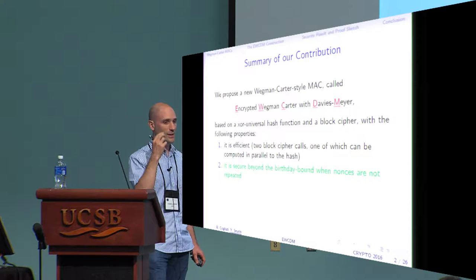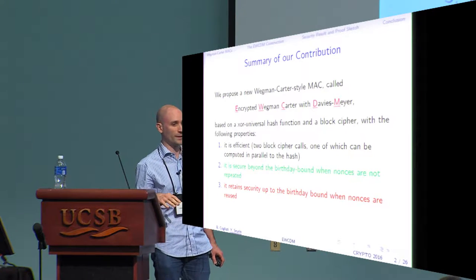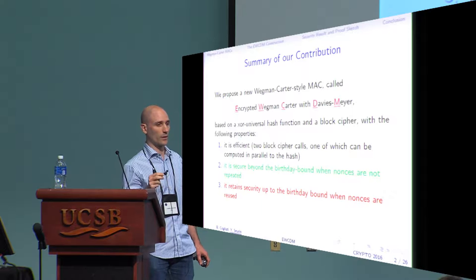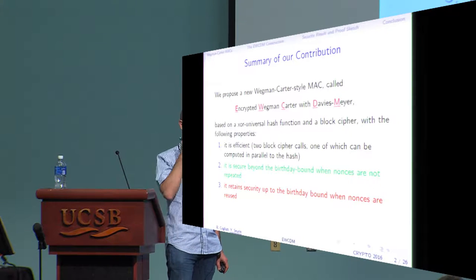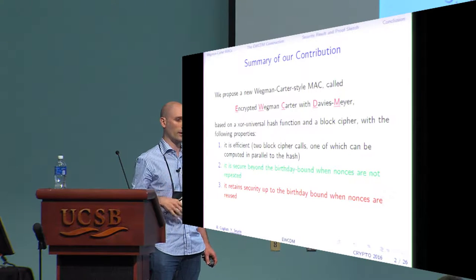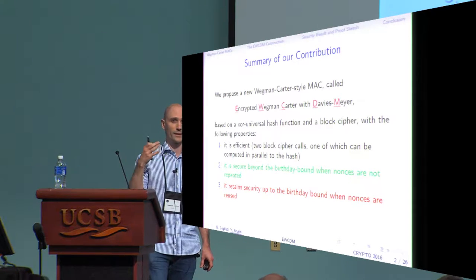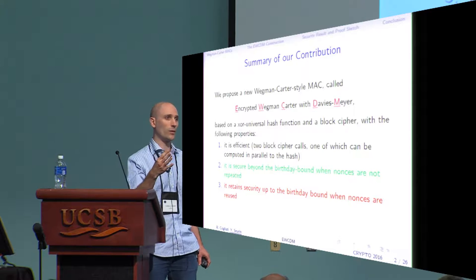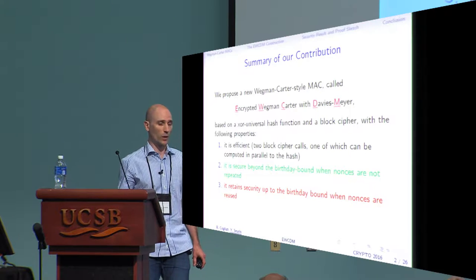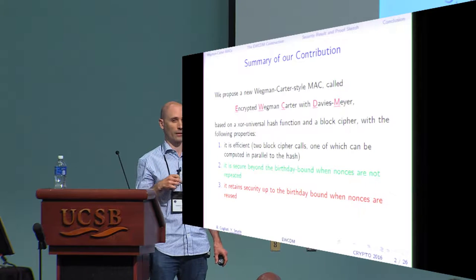It is secure beyond the birthday bound when nonces are not repeated, and it retains security up to the birthday bound when nonces are reused. There are some similarities with the SCT mode presented in the previous talk, and this is actually a kind of follow-up. The rationale is that we want this MAC to be very secure when nonces do not repeat — the nominal usage — and we want security not to be completely destroyed when nonces are inadvertently repeated.